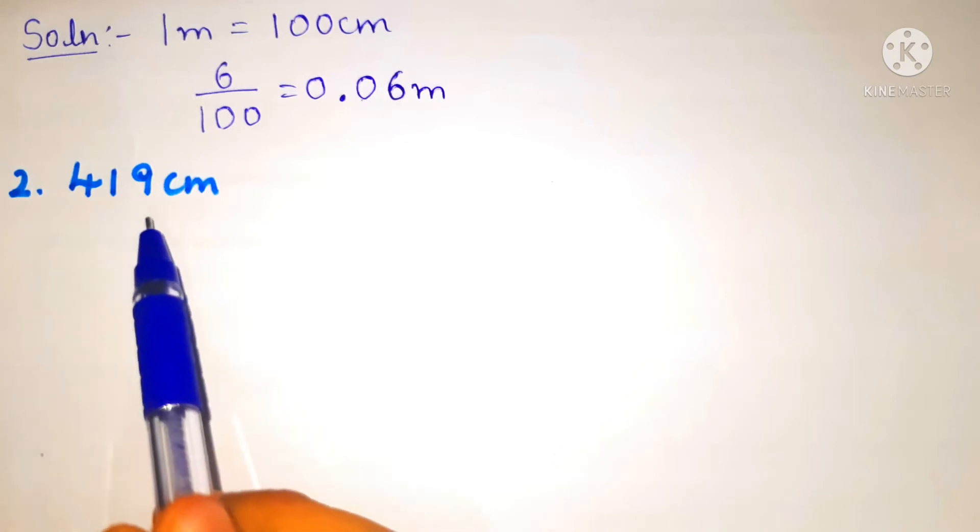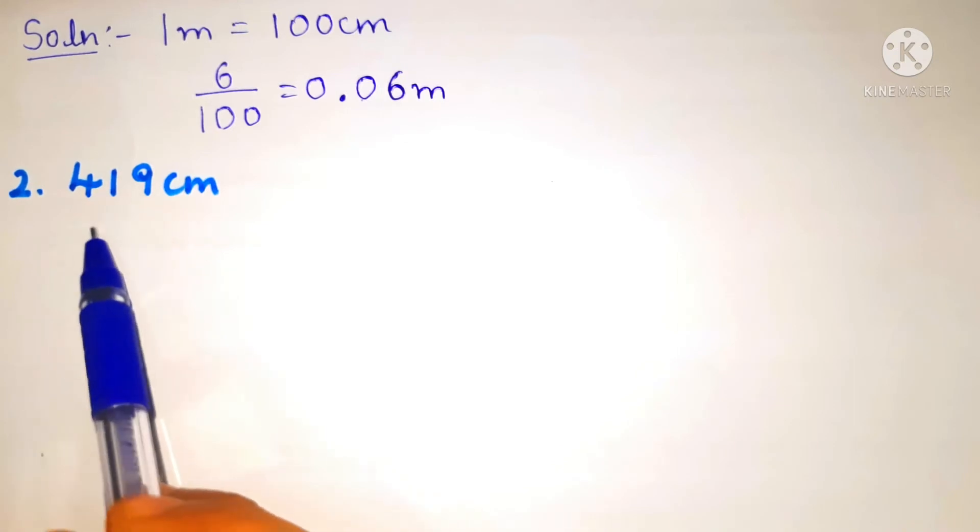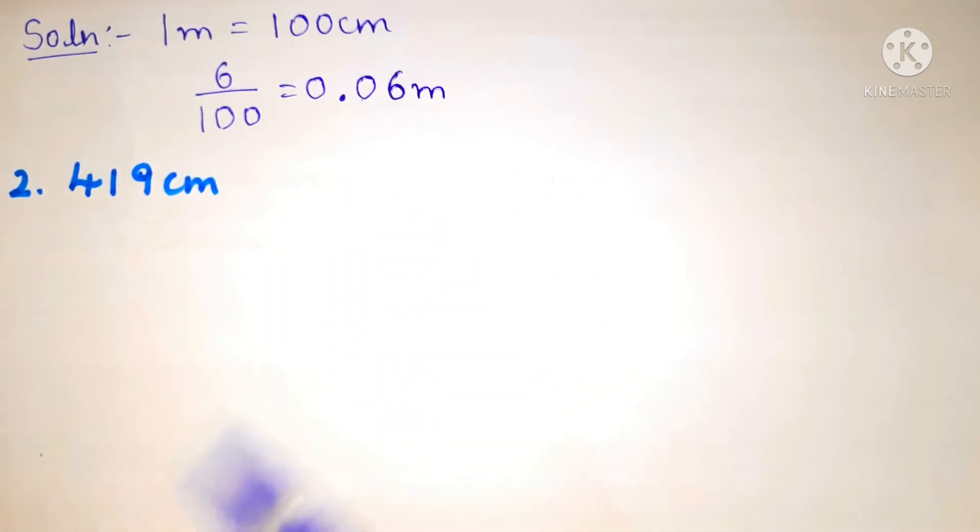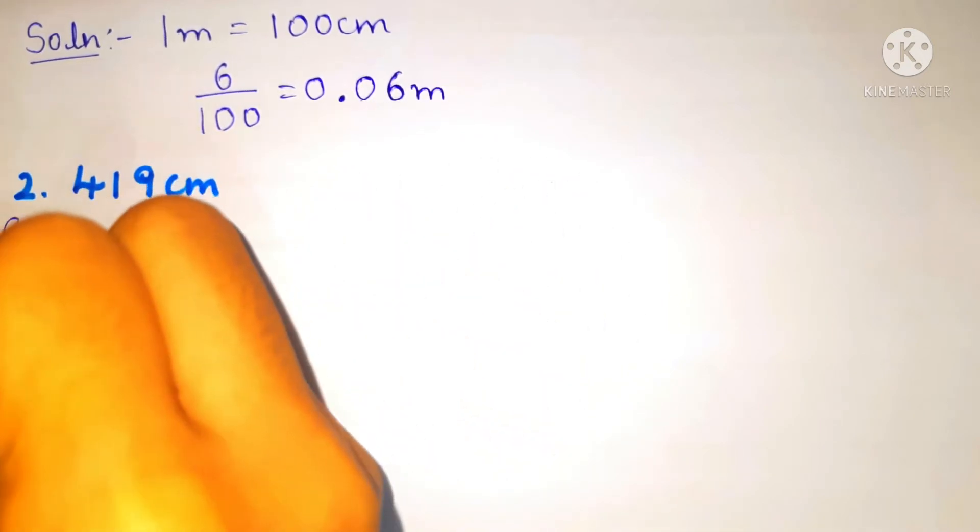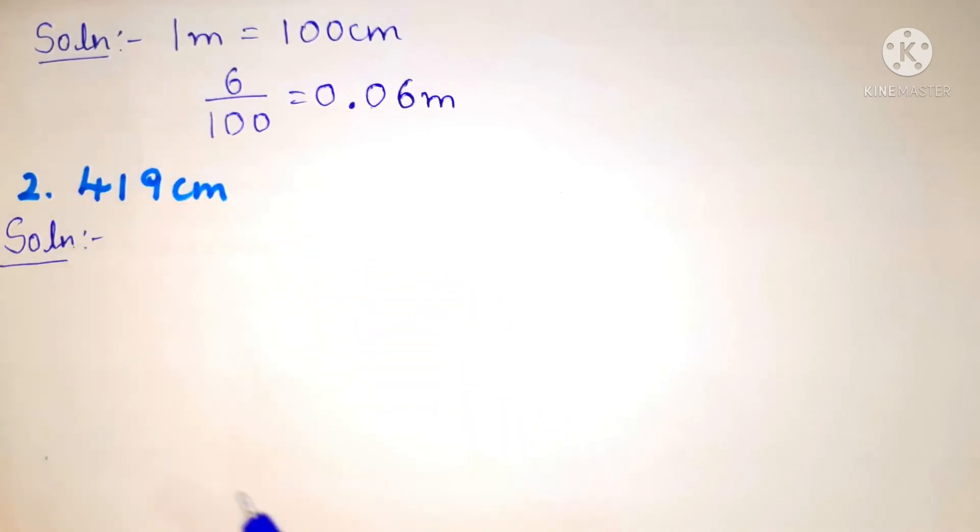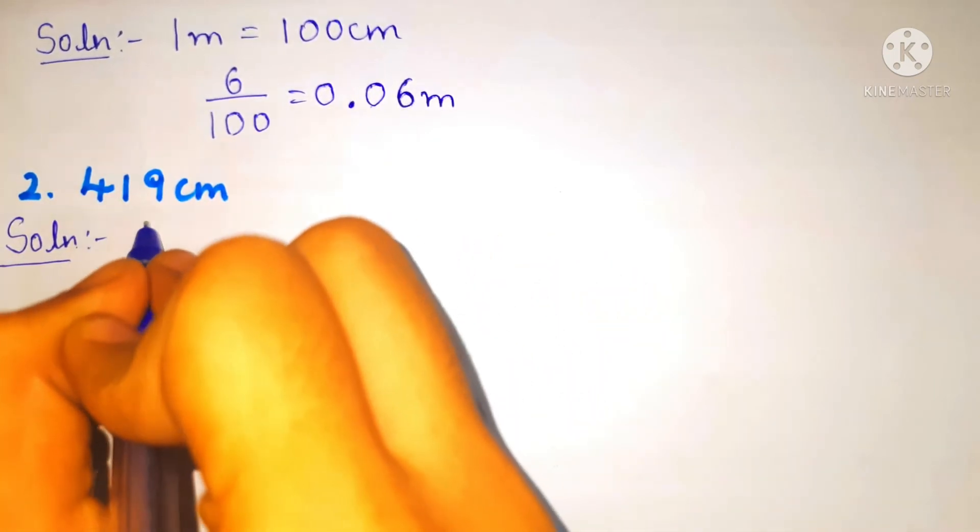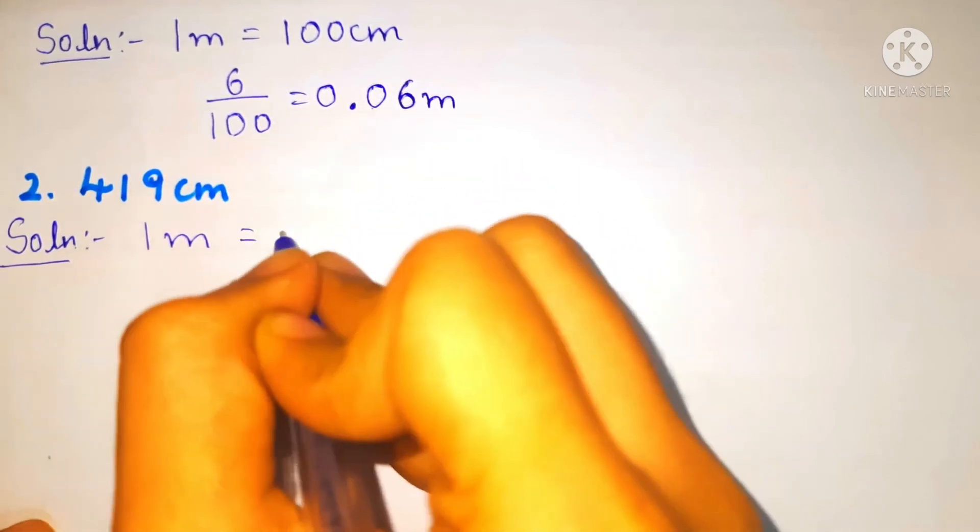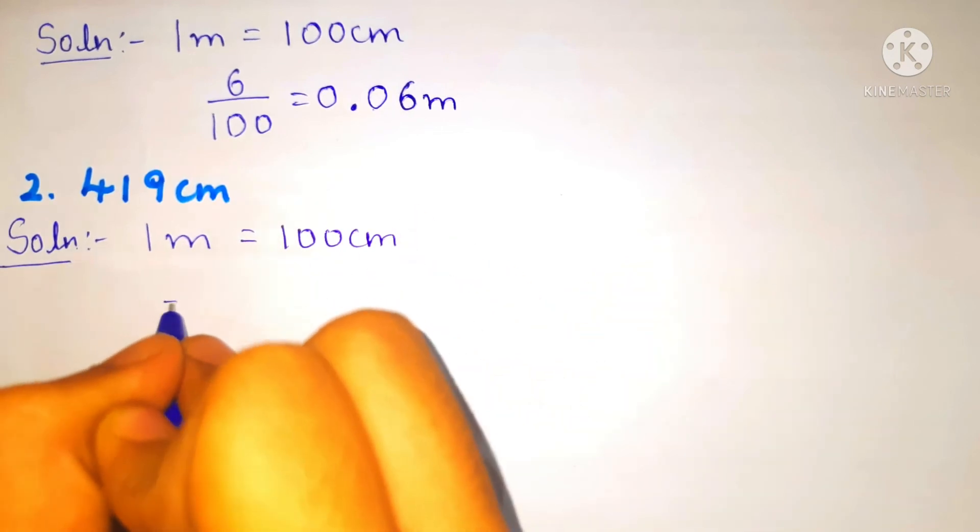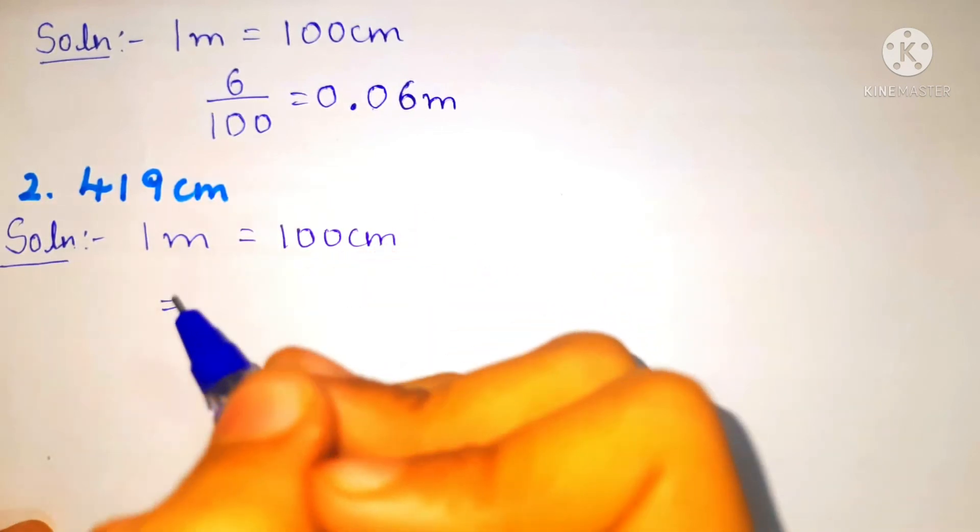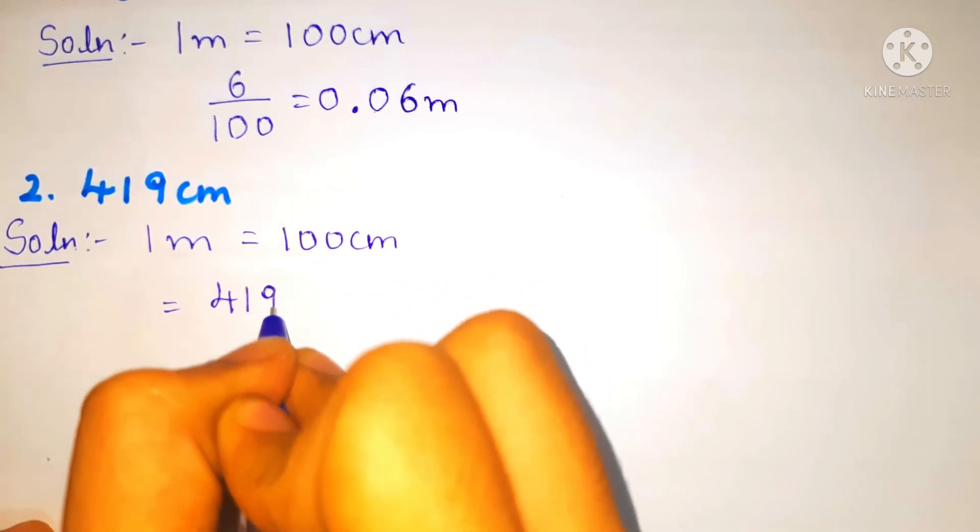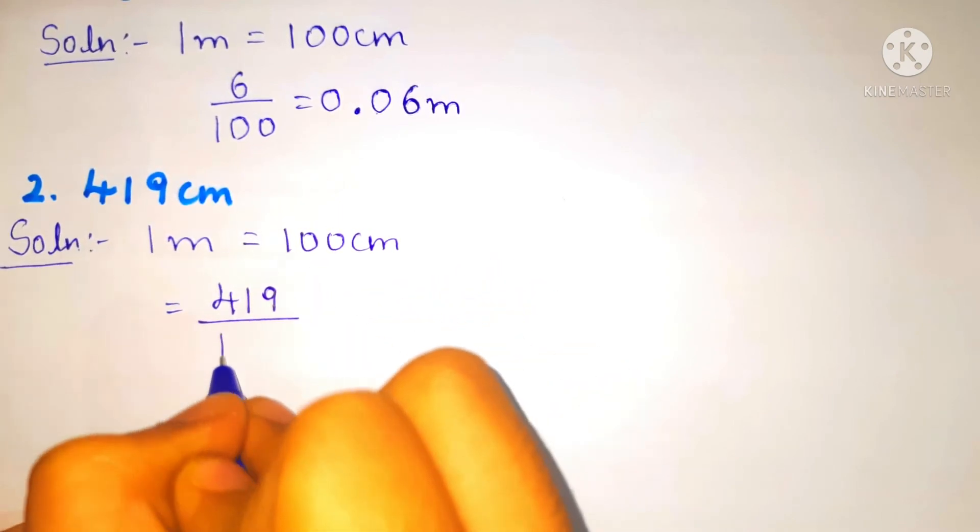So we'll look into another example which is 419 centimeter which we have to convert it into meter. One meter is equal to 100 centimeter. So we'll write 419 centimeter in numerator and by 100.